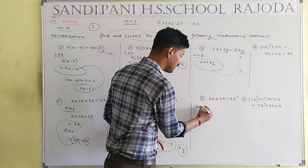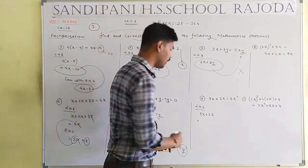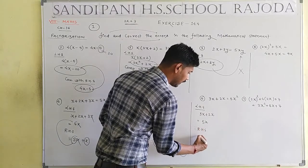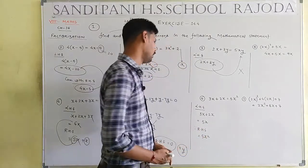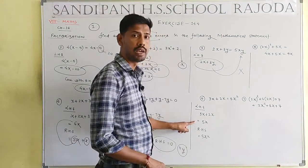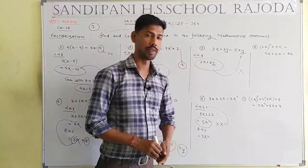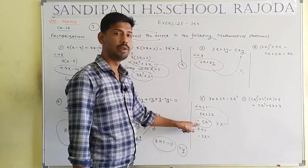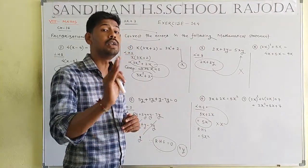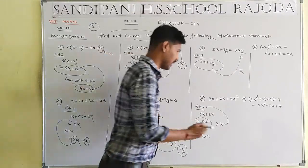Question number 6: LHS is 3x plus 2x, which equals 5x. But RHS is 5x square. LHS has x once and RHS has x twice. To make LHS equal to RHS, we need to multiply x into LHS — then both sides become equal.